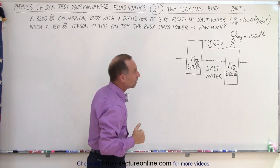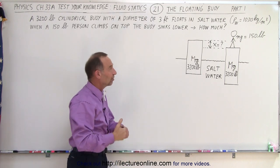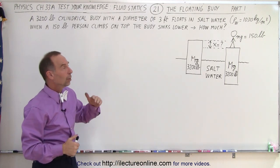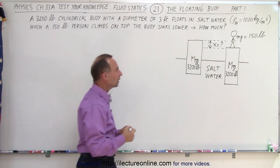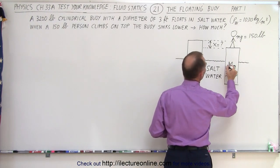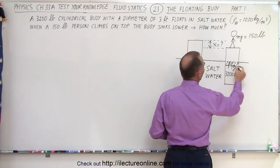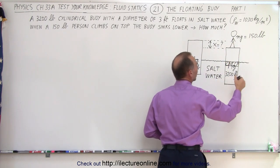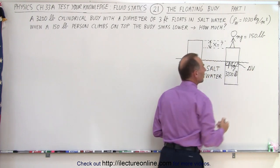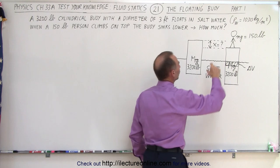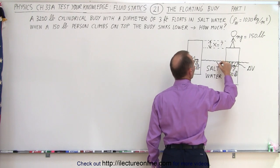That causes the buoy to go down somewhat. Let's call that distance x. The question is: how much is that? How much lower will the buoy be when a 150-pound person gets on top of it? The additional amount of buoy that's below the surface will be the additional displaced liquid due to the person standing on top. We'll call it delta V, the additional volume. If the buoy is that much further down, the distance from there to there would also equal x.